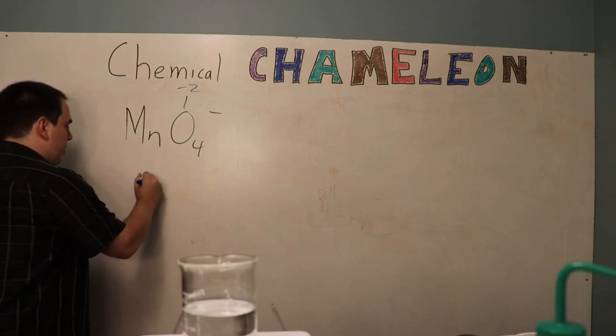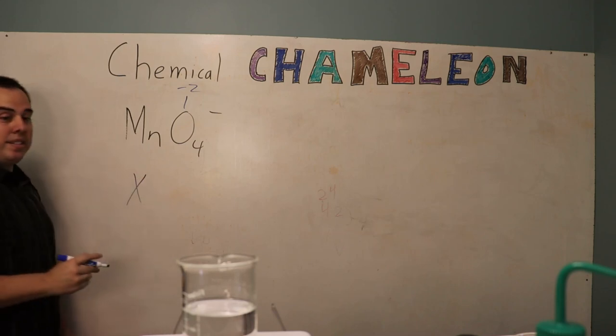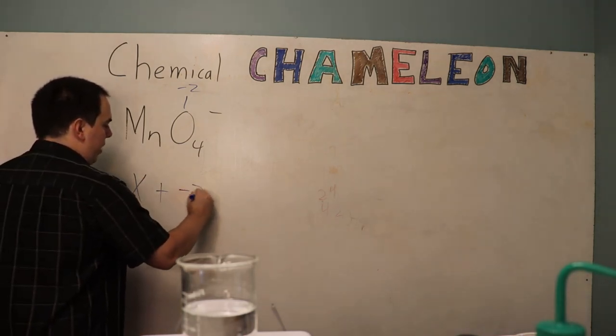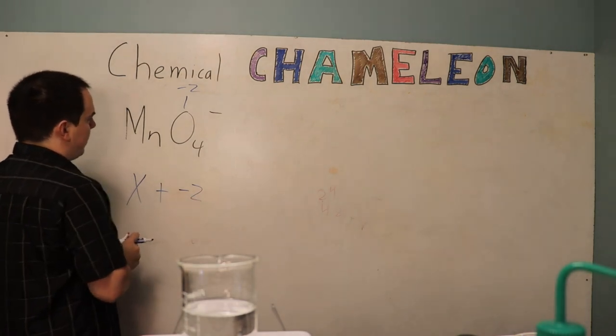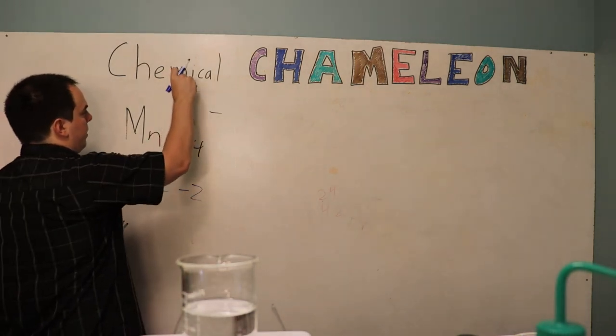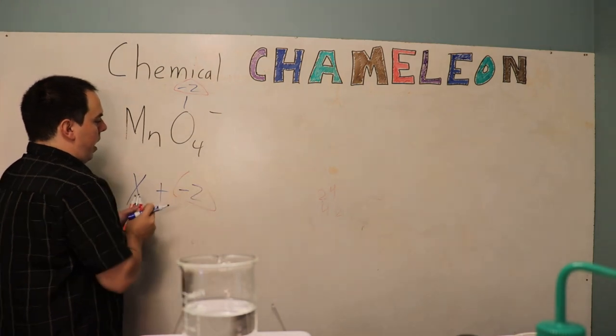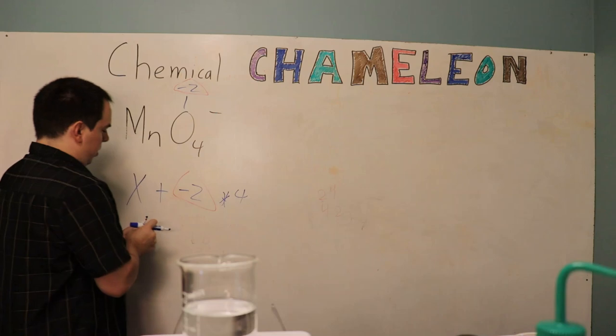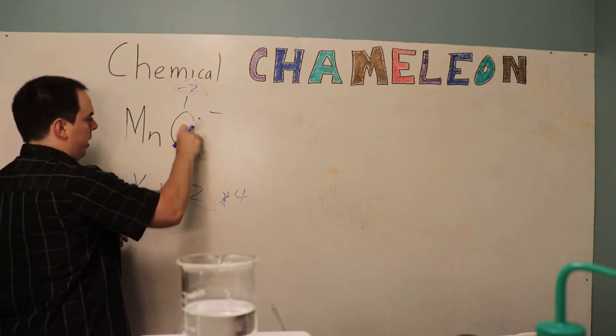So for the manganese we're going to simply put down an x since we don't know what it is yet and we're going to add that to the oxygens. Now the oxygens each have a negative 2 oxidation number which is taken from right here and we're going to multiply that by our number of oxygens which is 4.